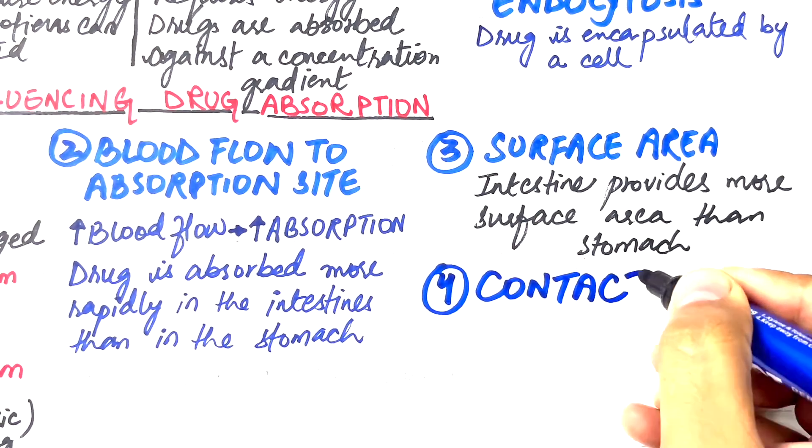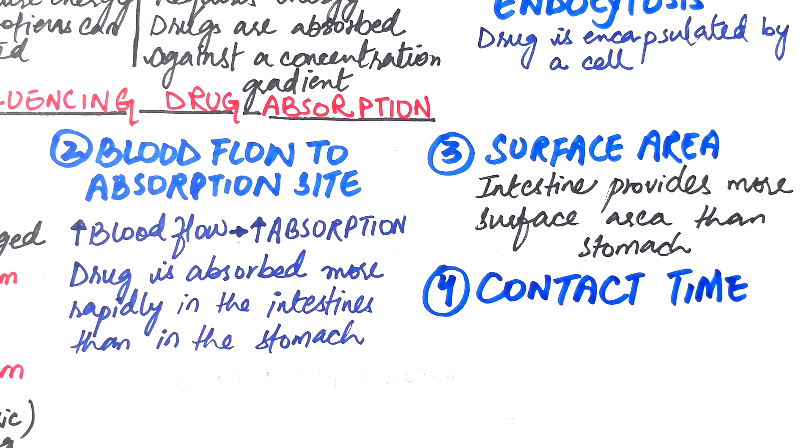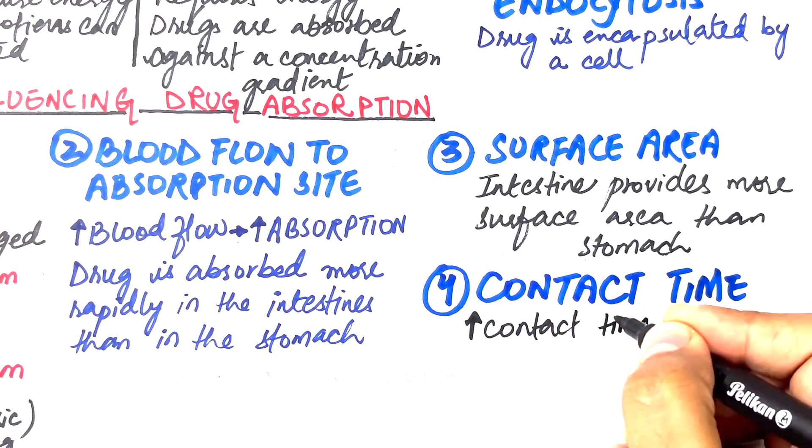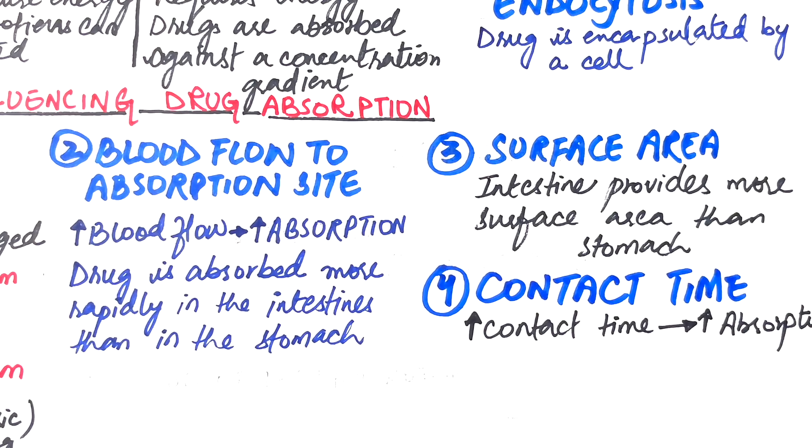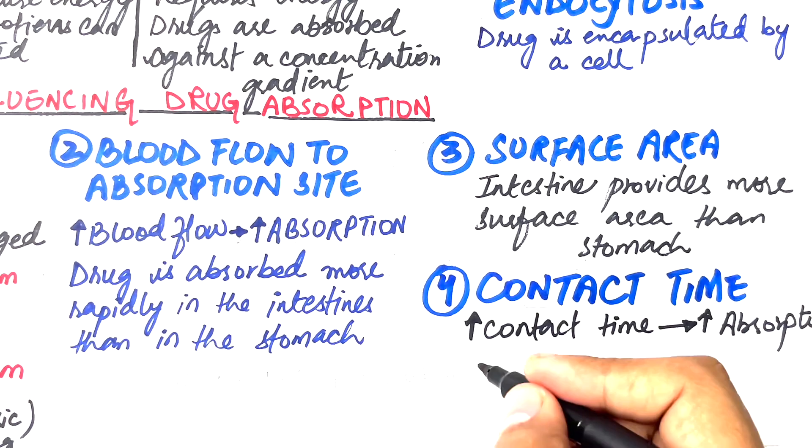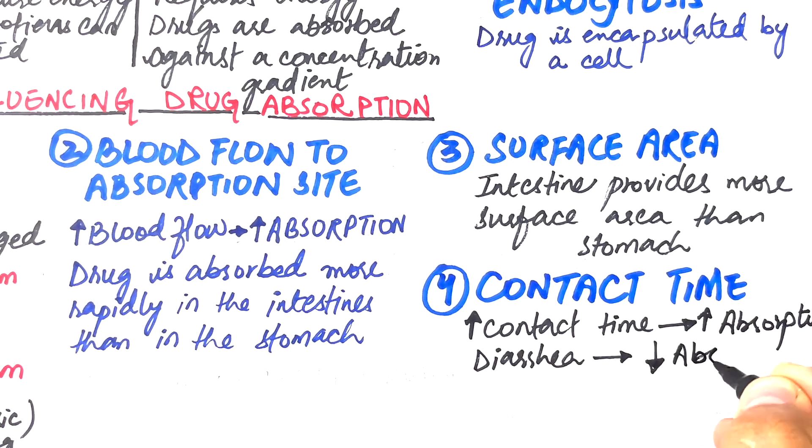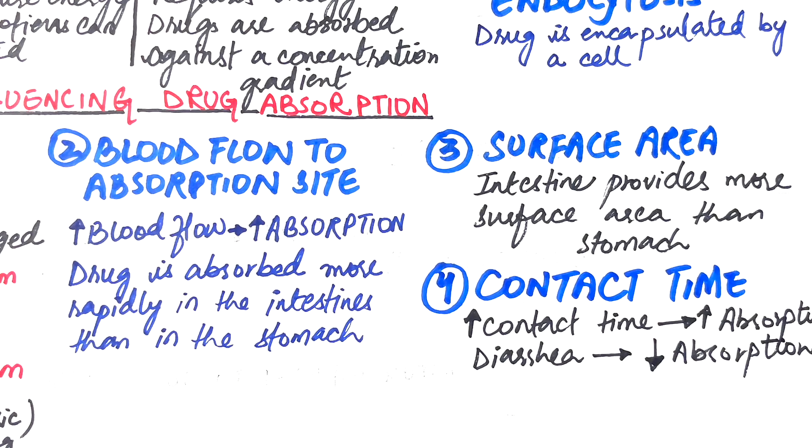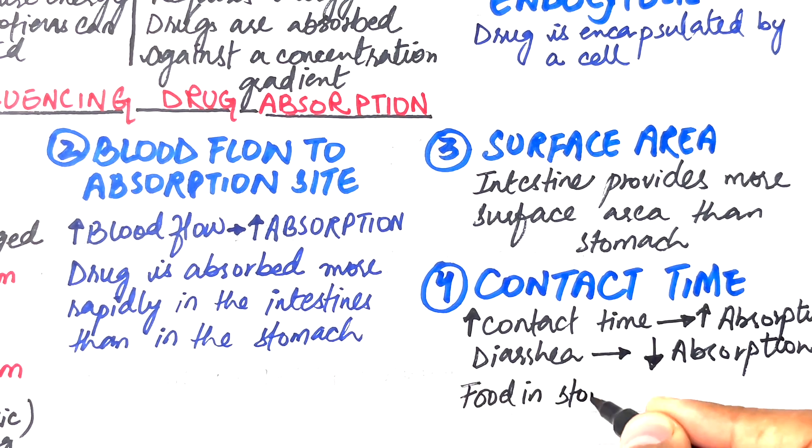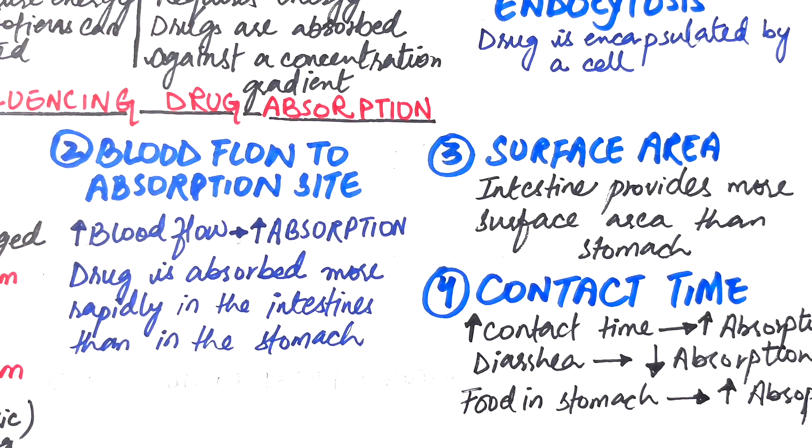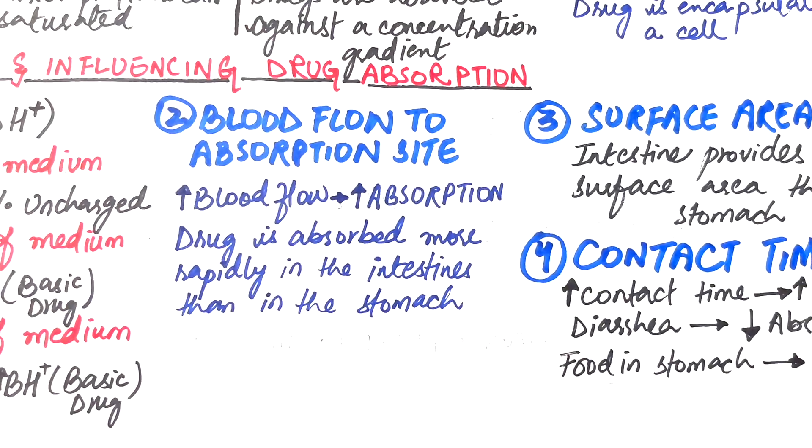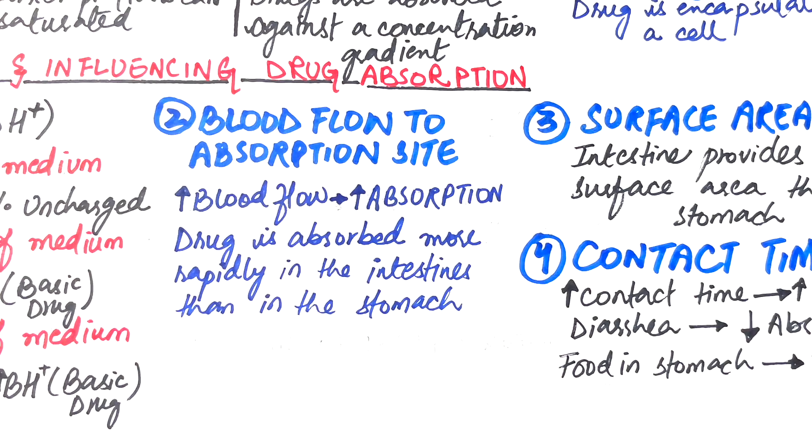The fourth factor is the contact time at the absorption site. If a drug remains for longer in a certain place, more of the drug will be absorbed. In cases where someone has severe diarrhea, the drug passes out of the body fast and the drug will not be absorbed well. On the other hand, if anything that delays the transport of the drug from the stomach to the intestine delays the rate of absorption. The presence of food in the stomach both dilutes the drug and at the same time slows the gastric emptying. Therefore, a drug taken with a meal is generally absorbed more slowly than it is taken with an empty stomach.